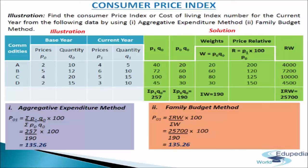For P₁Q₀, we multiply prices of the current year with quantities of the base year: 4×10=40, 6×12=72, 5×20=100, 3×15=45, giving ΣP₁Q₀ = 257. For P₀Q₀, we multiply price and quantity of the base period: 2×10=20, 5×12=60, 4×20=80, 2×15=30, giving ΣP₀Q₀ = 190. Applying the formula P₀₁ = (ΣP₁Q₀ / ΣP₀Q₀) × 100 = (257/190) × 100, we get a consumer price index of 135.26.